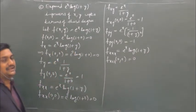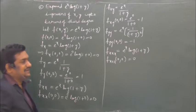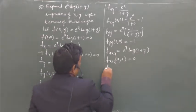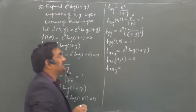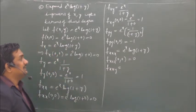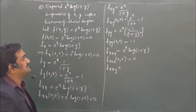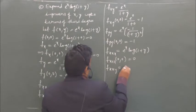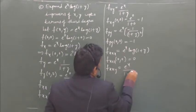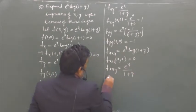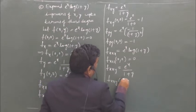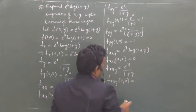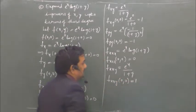The next term is 3x²y · fxxy at (0,0). Let us find fxxy, which is the derivative of fxy with respect to x. This gives e^x/(1+y). Evaluating at (0,0): e^0/(1+0) = 1.